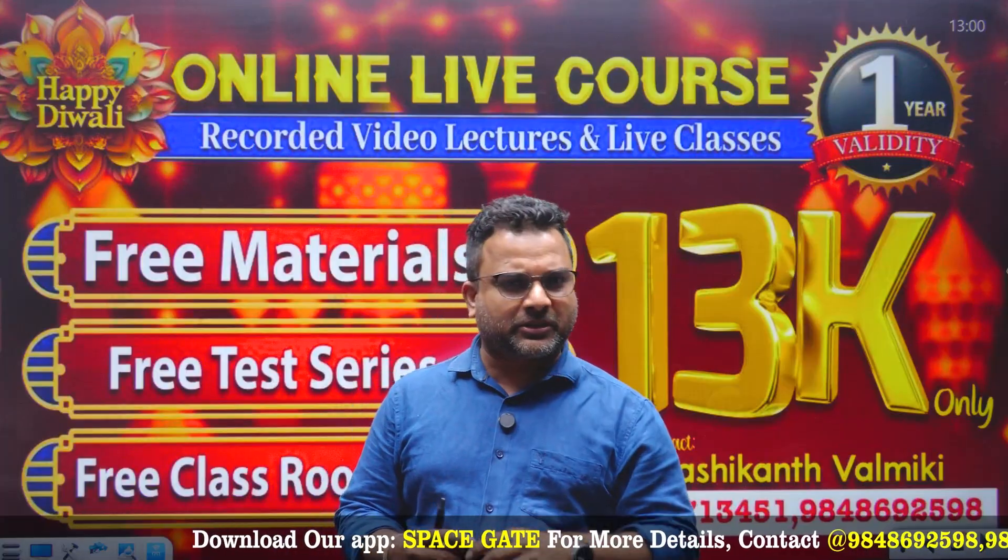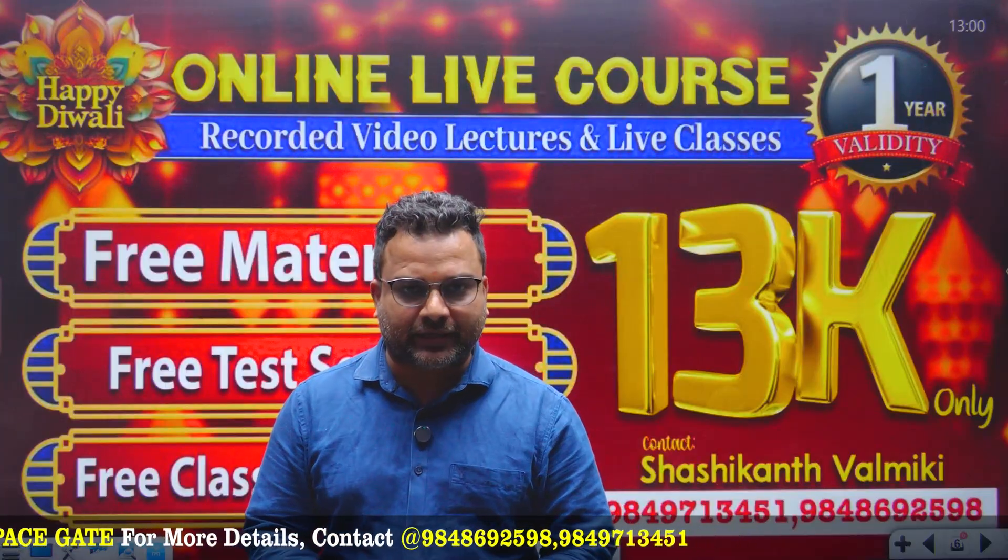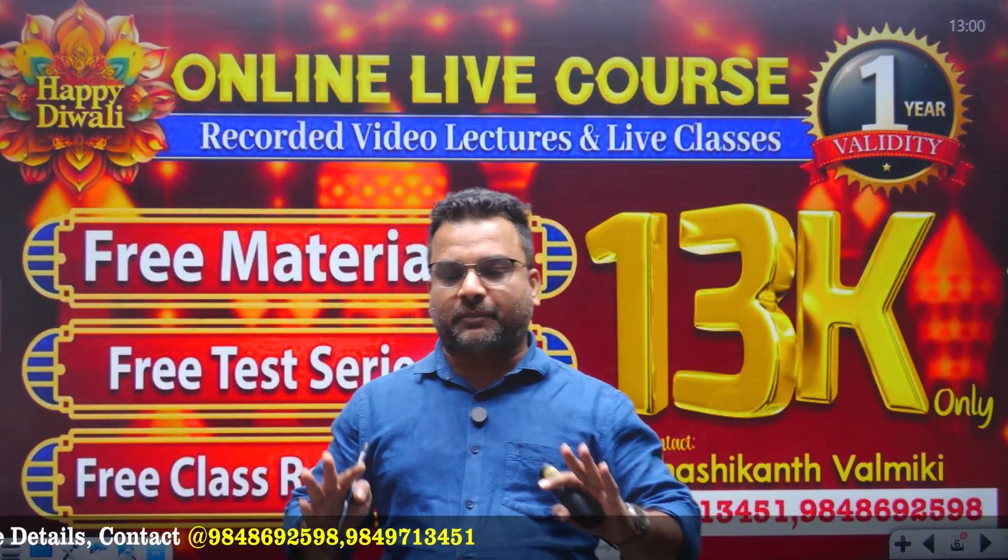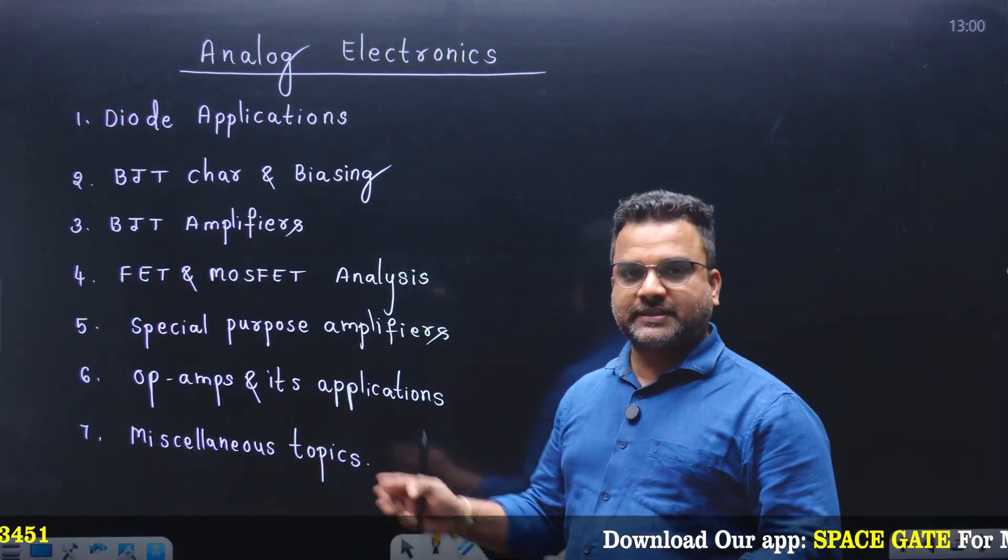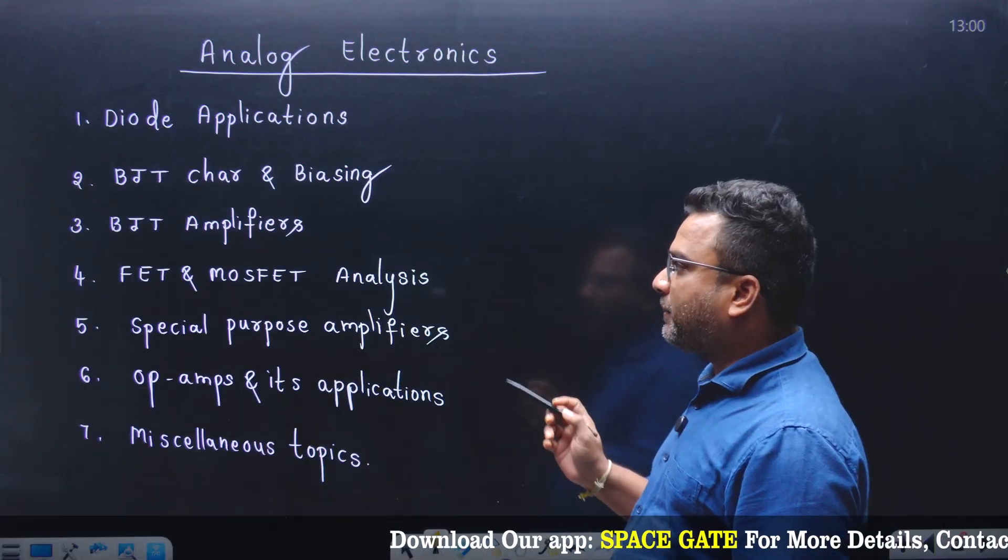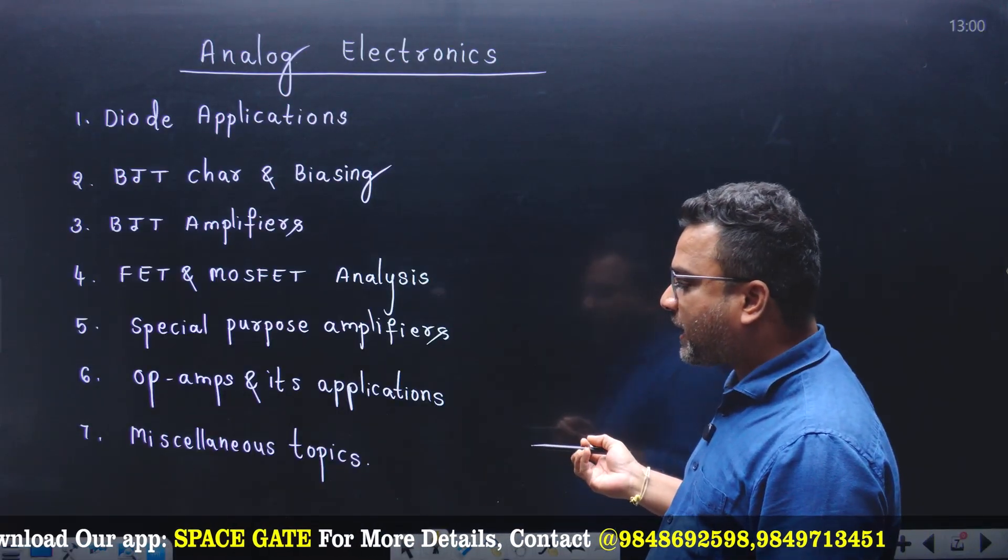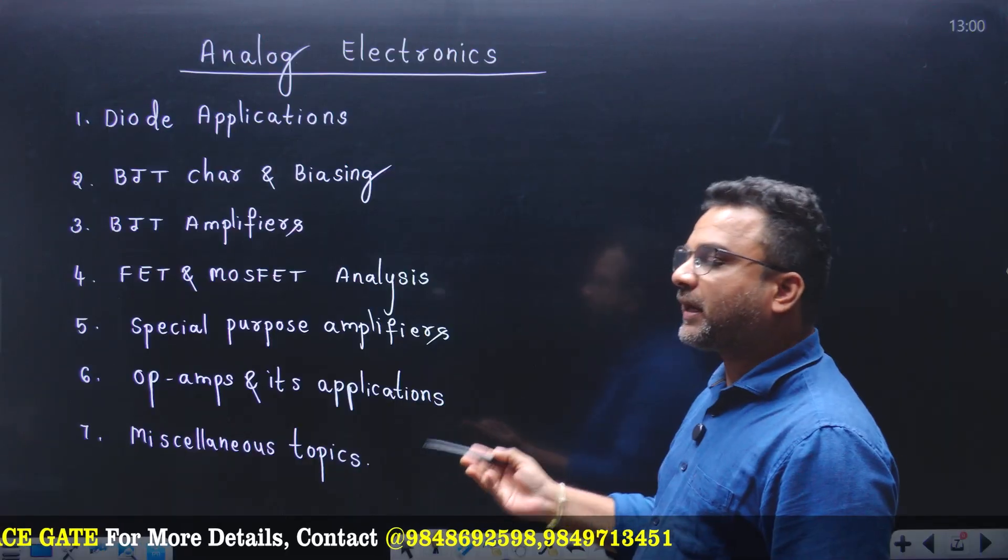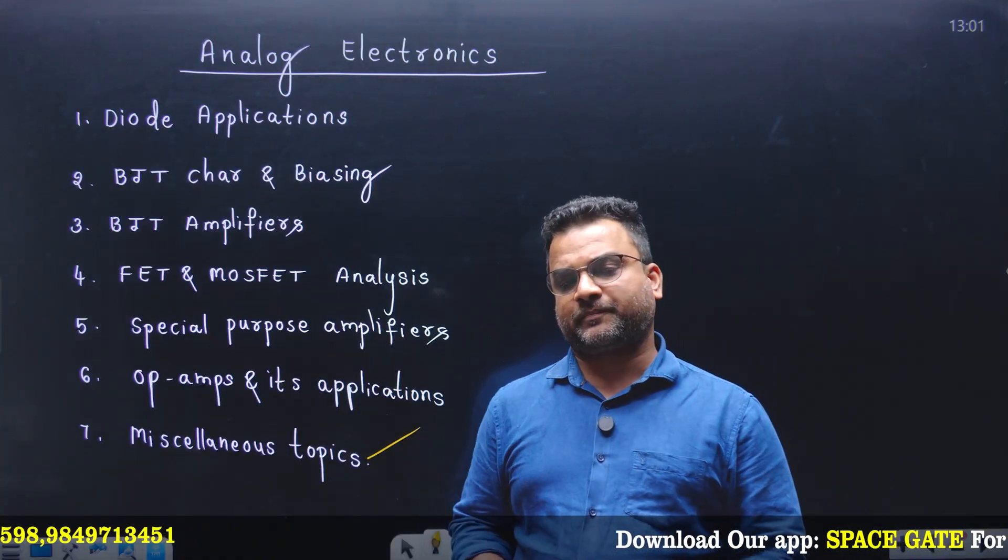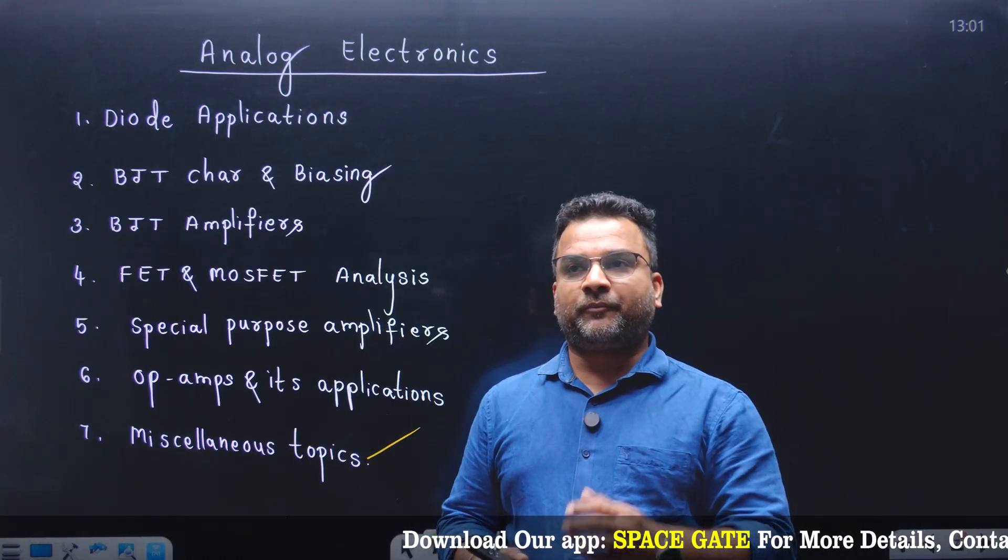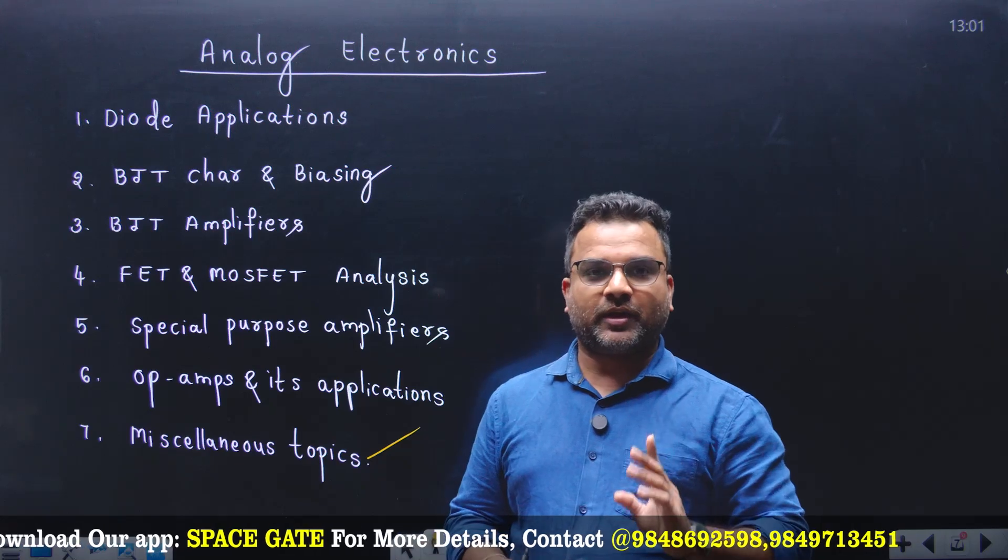My name is Shivaram, I'm an analog faculty in Saimedakoti and SPACE GATE Engineering Academy. If you take AE and EE, the analog electronic syllabus includes seven units: diode applications, BJT biasing, BJT amplifiers, FET and MOSFET analysis, special purpose amplifiers, op-amps and its applications, and miscellaneous applications.